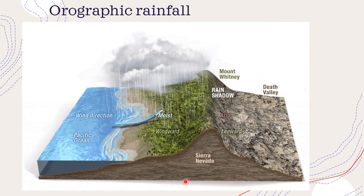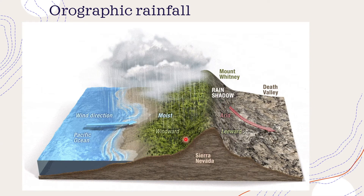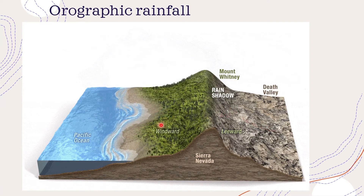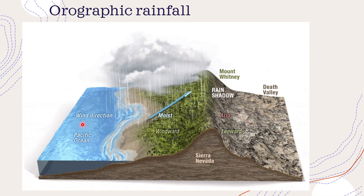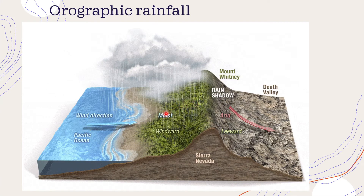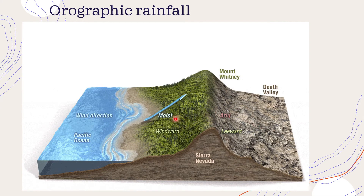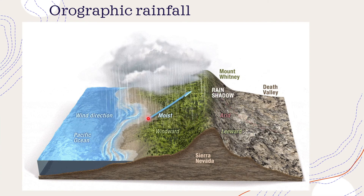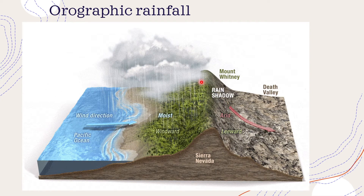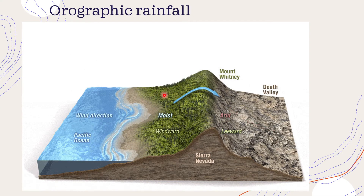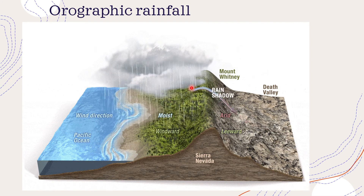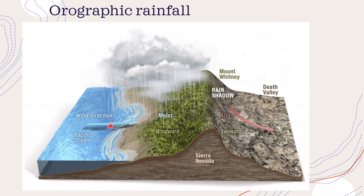Orographic or relief rainfall — this type of rainfall is caused by the cooling of moisture-laden air as it rises over a relief or a barrier. Here we can see how the winds are made to rise over this barrier. When the moisture-laden winds are unable to cross the mountain lying as a barrier, they are forced to ascend. The sudden ascent causes cooling of the air, leading to condensation and precipitation. Clouds get formed and on the windward side — the side from where the wind is coming — heavy rainfall begins to occur.